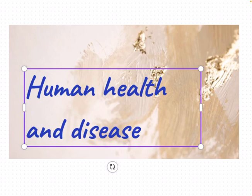Next are acquired diseases, which develop after birth. These are further classified into two types: communicable diseases and non-communicable diseases. Communicable diseases are those caused by pathogens — which can be bacteria, viruses, or other agents — and they can easily transmit from an infected individual to a healthy individual. Such diseases are also called infectious diseases.